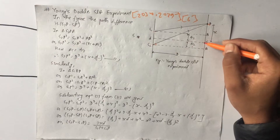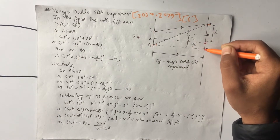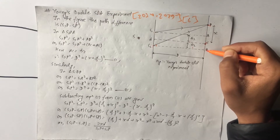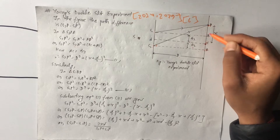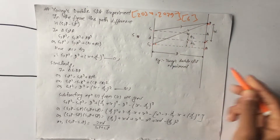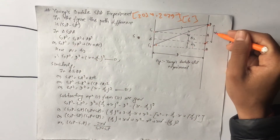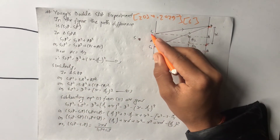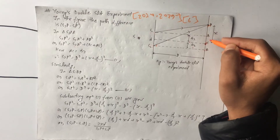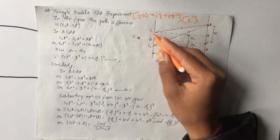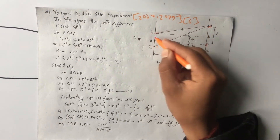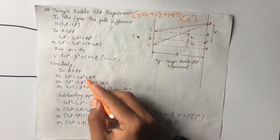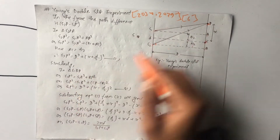AP is equal to PC plus CA, which gives us x plus d/2. Similarly for S1P, by Pythagoras theorem in triangle S1BP: S1P squared equals S1B squared plus BP squared, where BP equals x minus d/2.